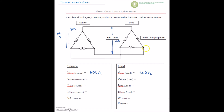For a delta, our equations are: V line is equal to V phase, and I line is equal to I phase times root three. So if the voltage line equals the voltage phase, we can just drop this in: 600 volts on the phase. We can clearly see that this voltage is the same from here to here, and if we bring that in right across the phase, there is 600 volts across the phase.